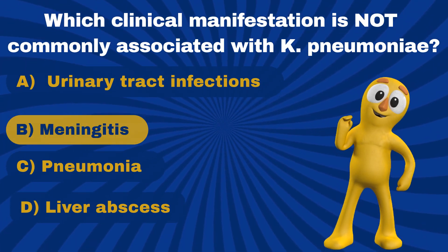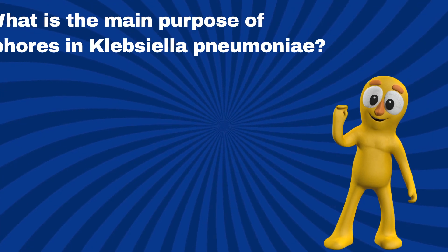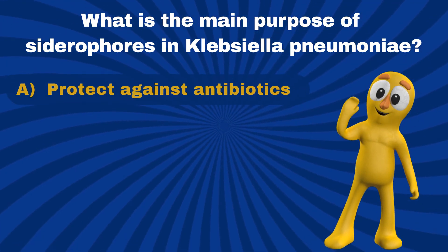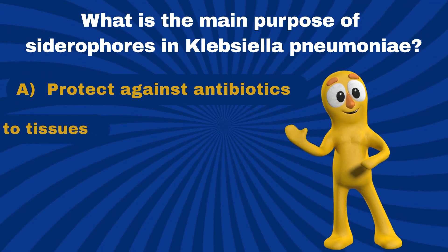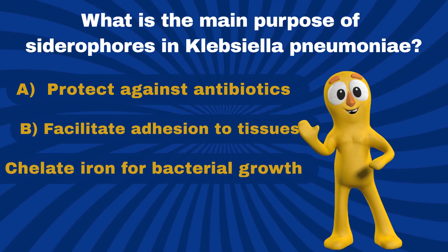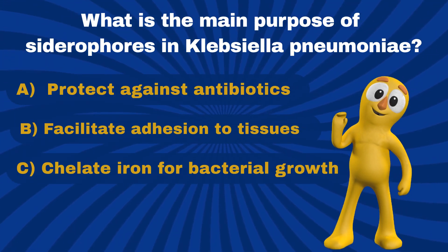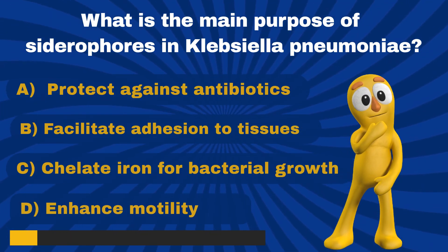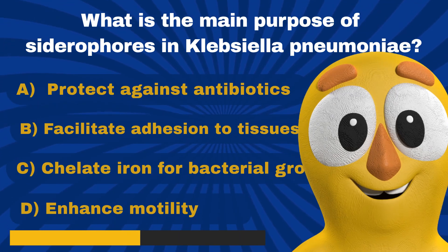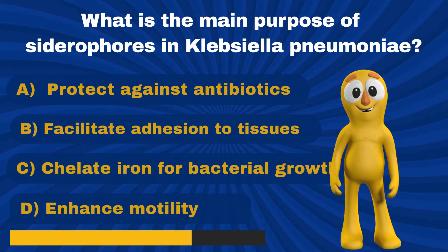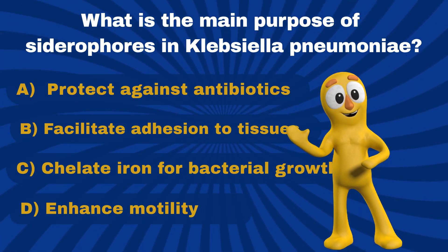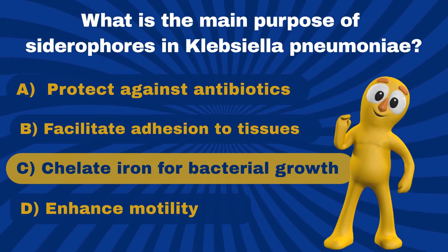Question 5. What is the main purpose of siderophores in Klebsiella pneumoniae? A. Protect against antibiotics. B. Facilitate adhesion to host tissues. C. Chelate iron for bacterial growth. D. Enhance motility. That's right. It is C — Chelate iron for bacterial growth.